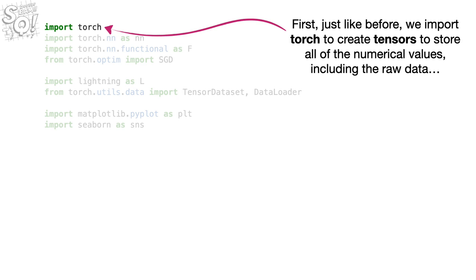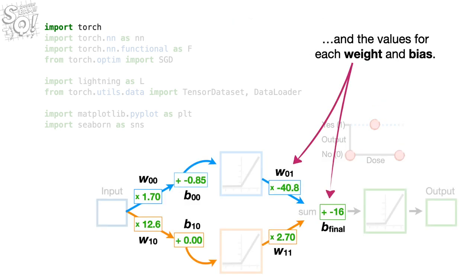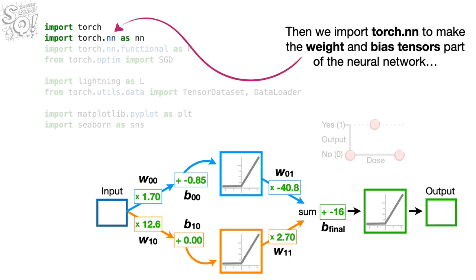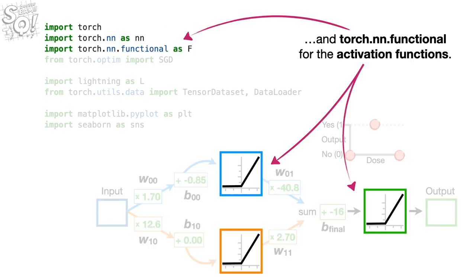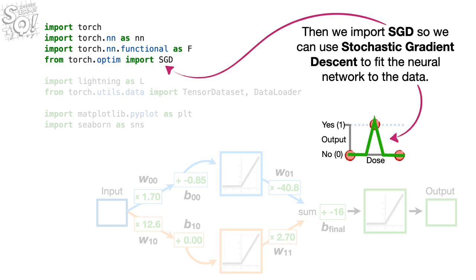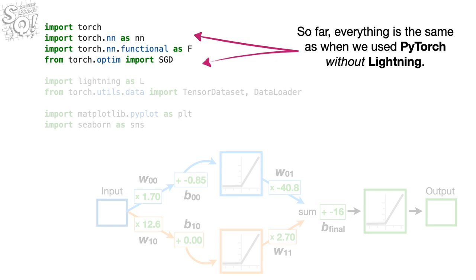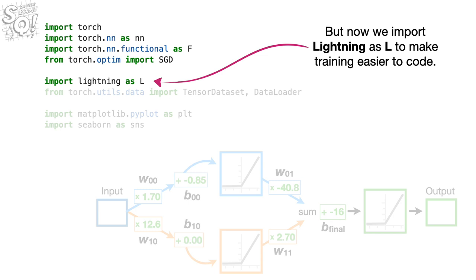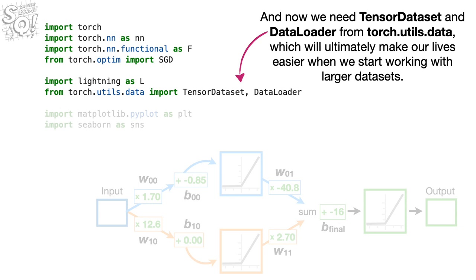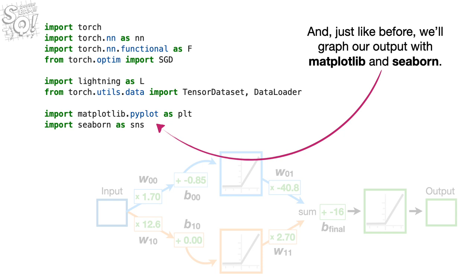First, just like before, we import TORCH to create tensors to store all of the numerical values, including the raw data and the values for each weight and bias. Then we import TORCH.NN to make the weight and bias tensors part of the neural network, and TORCH.NN.Functional for the activation functions. Then we import SGD so we can use Stochastic Gradient Descent to fit the neural network to the data. But now we also import Lightning as L to make training easier to code, and TensorDataSet and DataLoader from torch.utils.data, which will make our lives easier when working with larger data sets. And, just like before, we'll graph our output with Matplotlib and Seaborn.